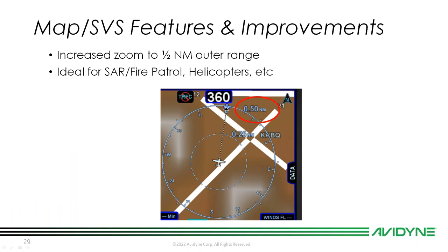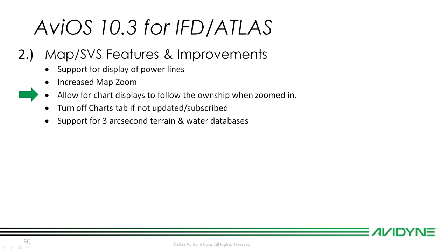We increased the map zoom significantly: you can now zoom all the way down to half a nautical mile for the outer ring, quarter mile for the inner ring. This is a really cool feature for search and rescue, fire patrol, and helicopter operators — something they requested and we were able to deliver.